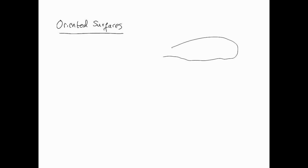In its most basic form, an oriented surface is: if you have some surface, we need to consider the normal to it. Say this is n1; then on the other side there is a normal minus n1. If this is the case throughout the surface, then the surface has two sides. Any surface that has two sides is considered an oriented surface.